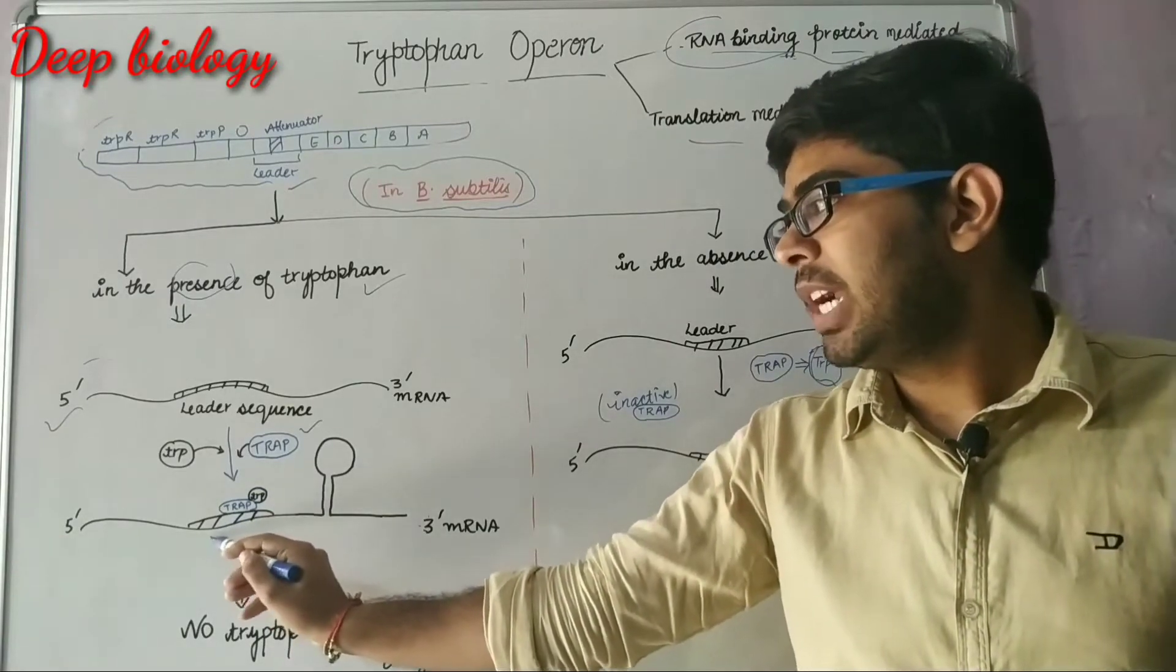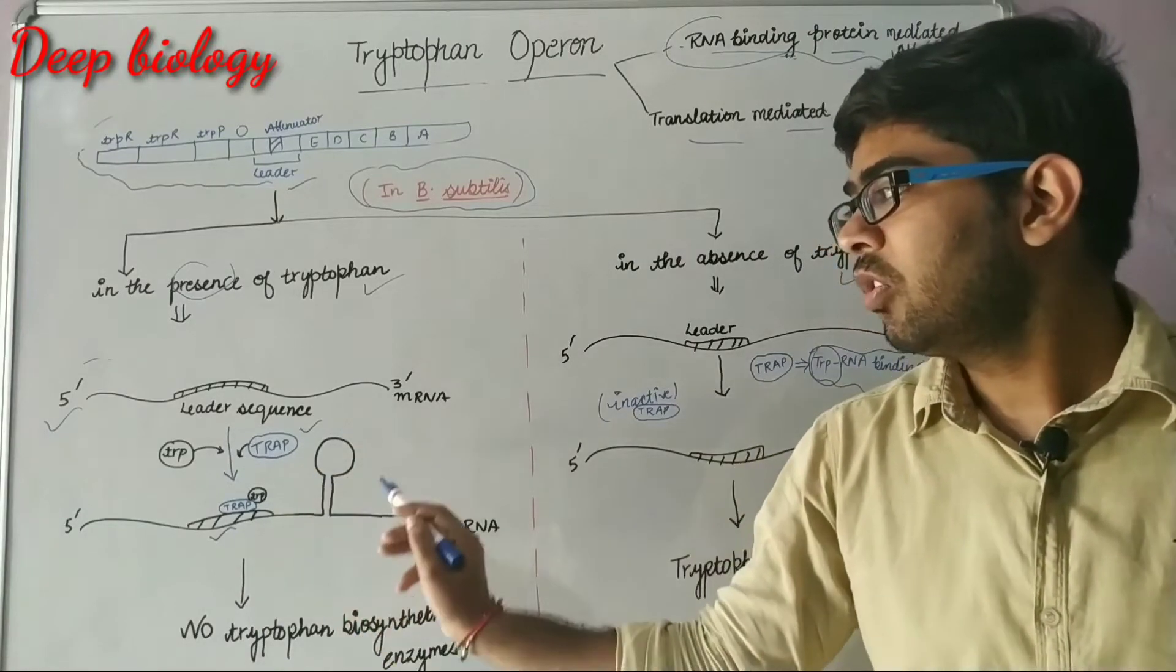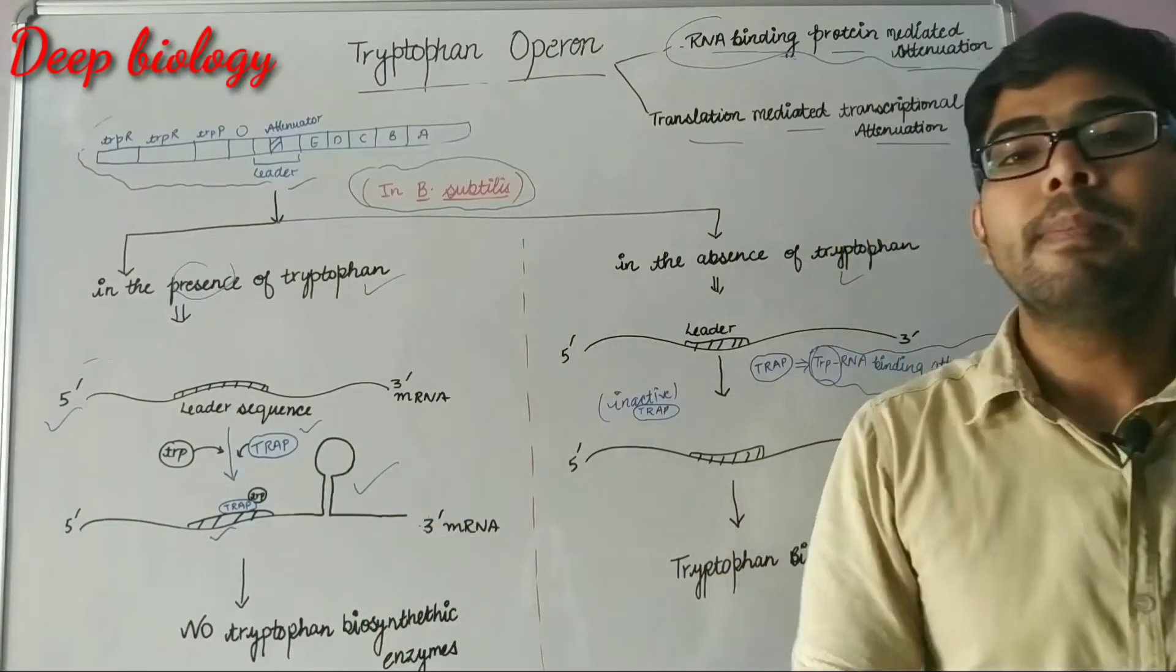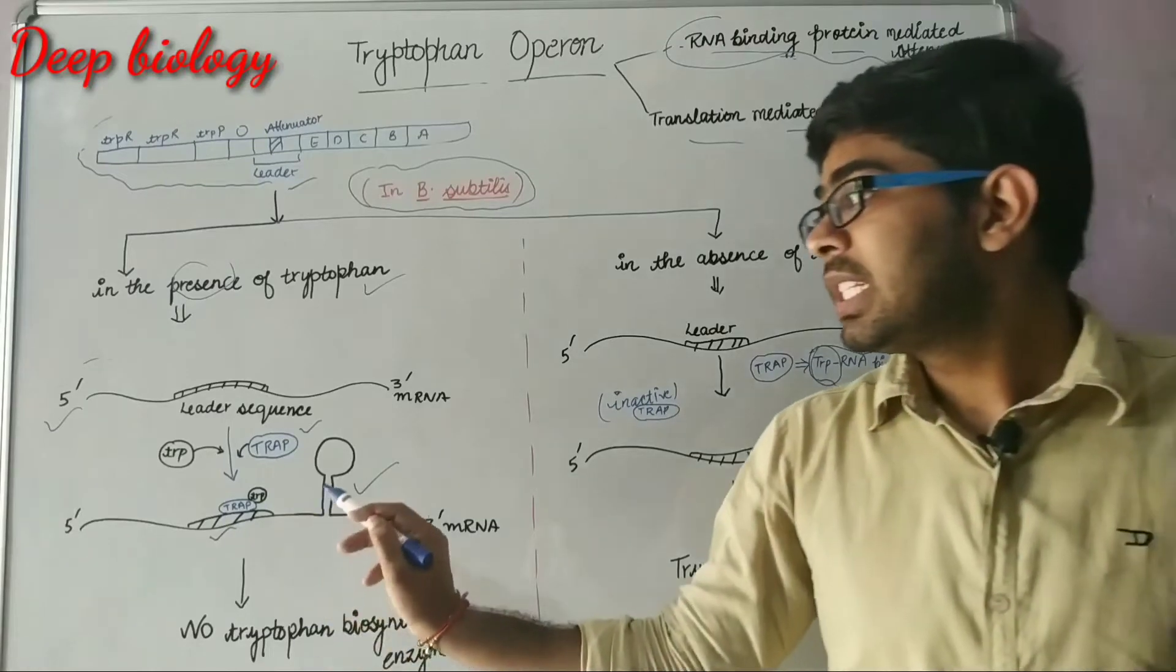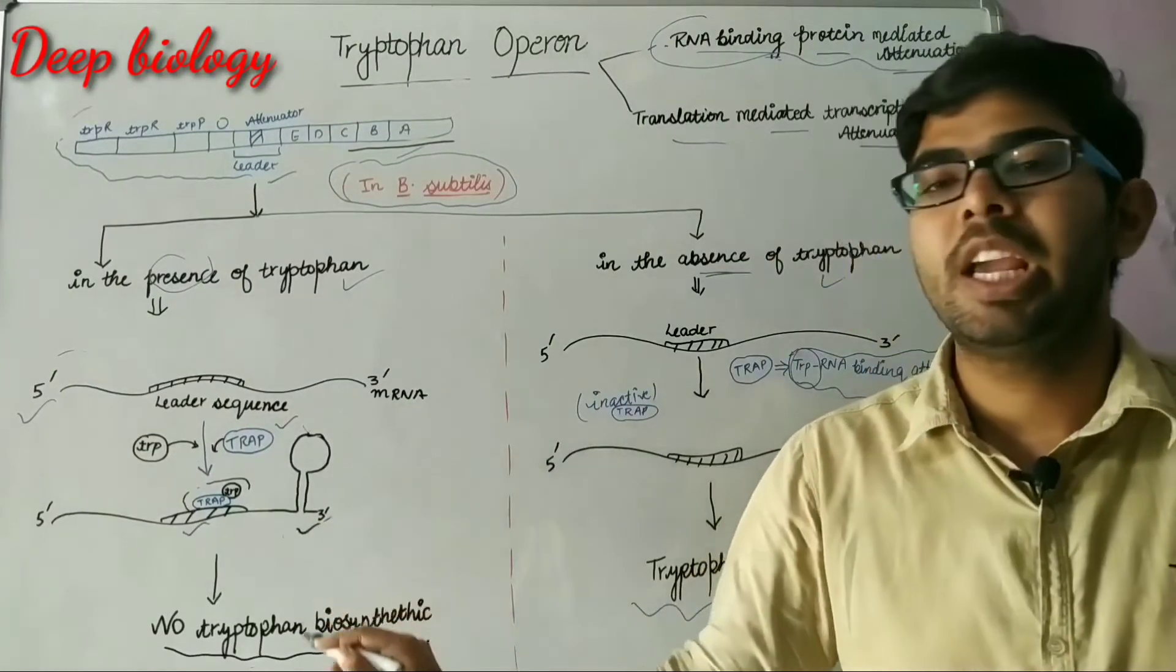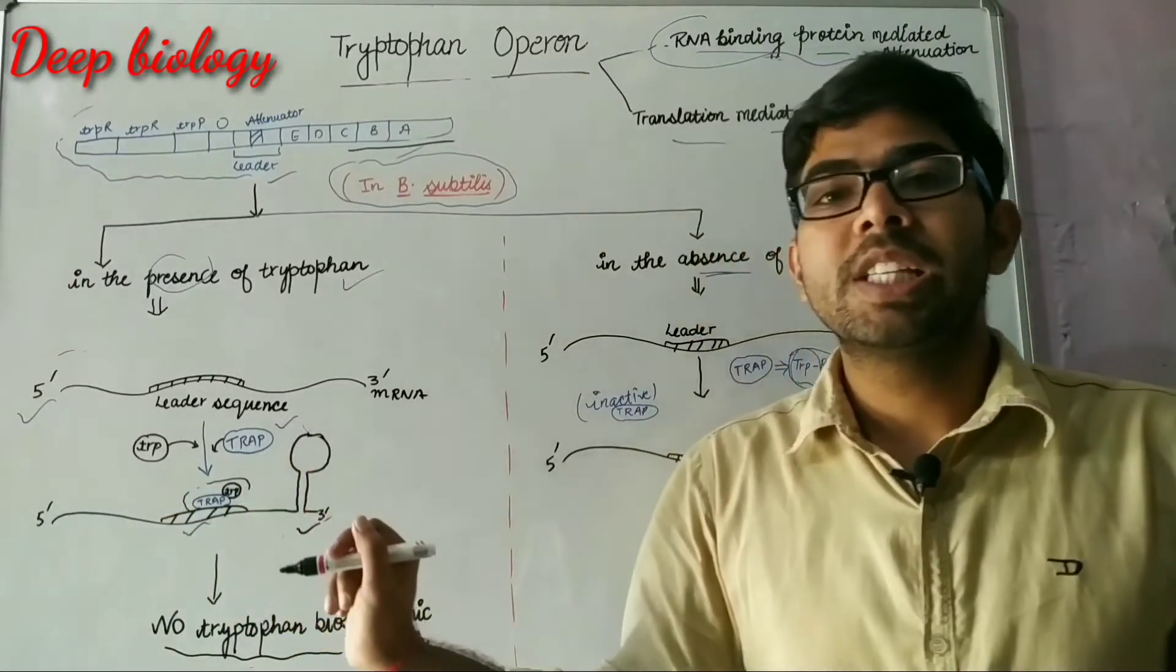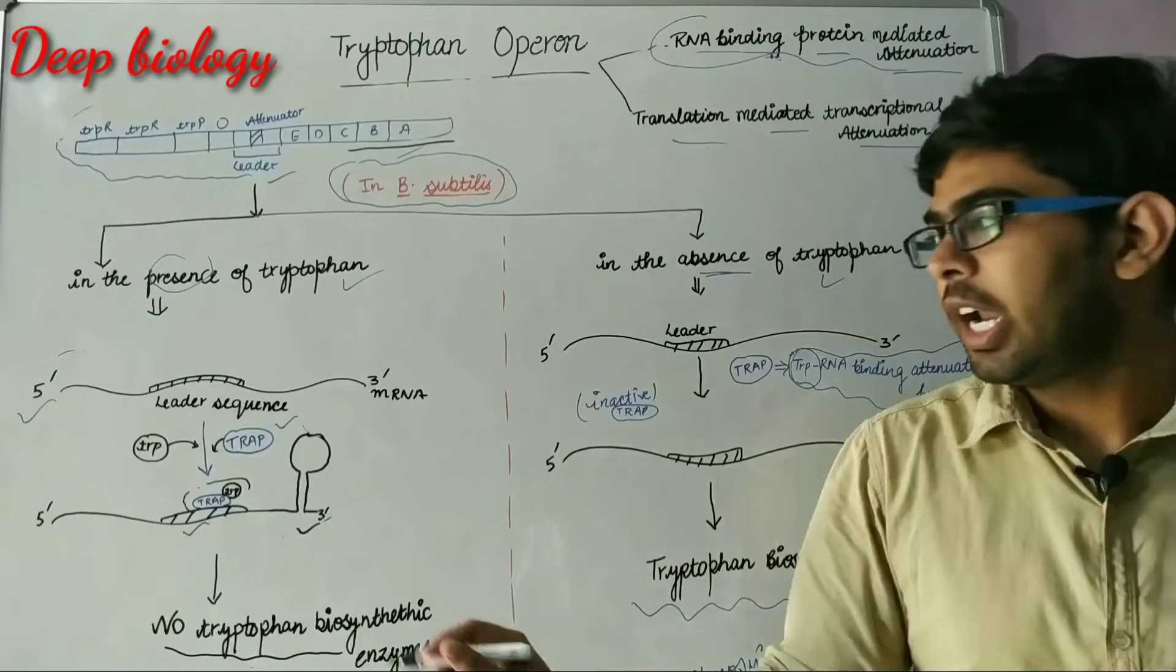This TRAP protein binds to the leader sequence and there will be formation of stem loop. This stem loop or hairpin loop in the mRNA causes the RNA polymerase to not proceed further and terminate at this hairpin loop region.